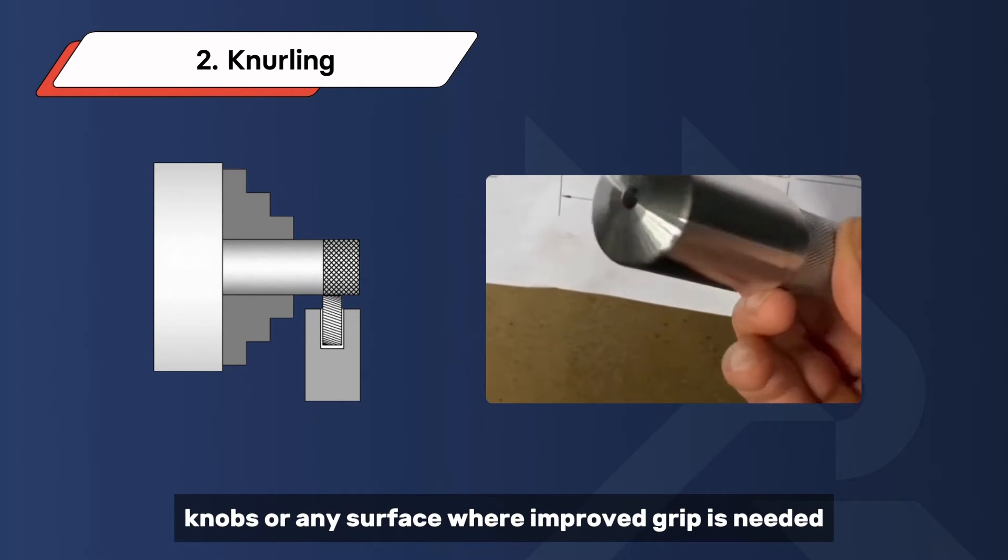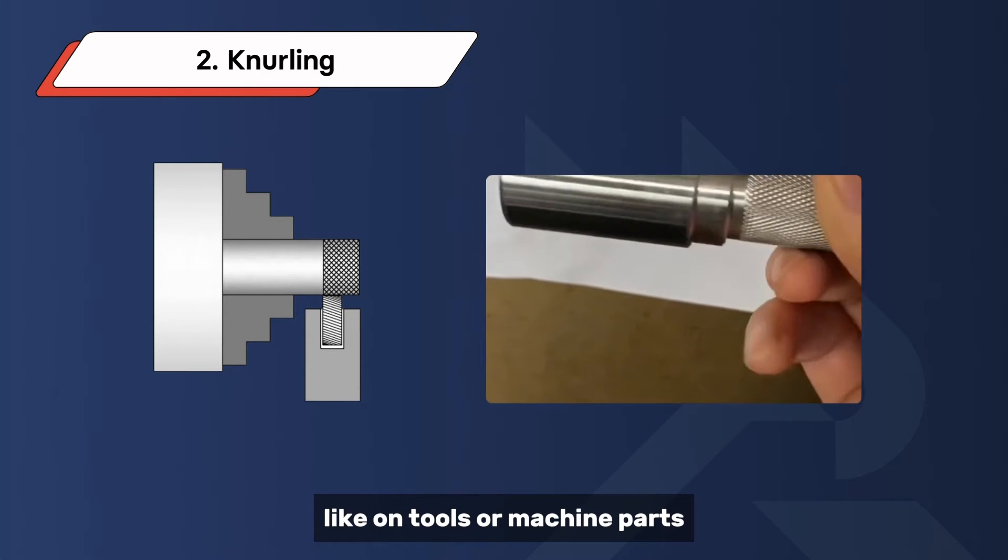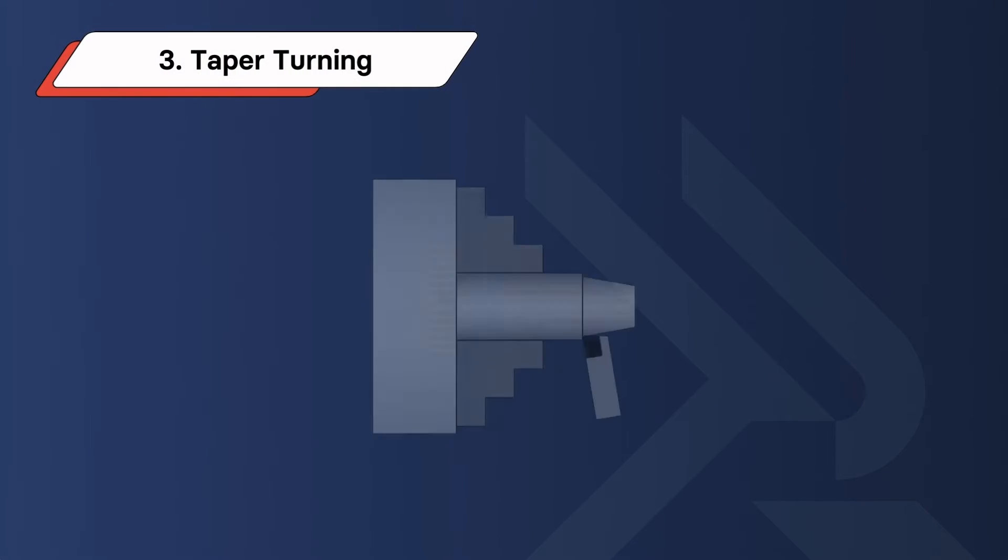This is commonly seen on handles, knobs, or any surface where improved grip is needed, like on tools or machine parts.